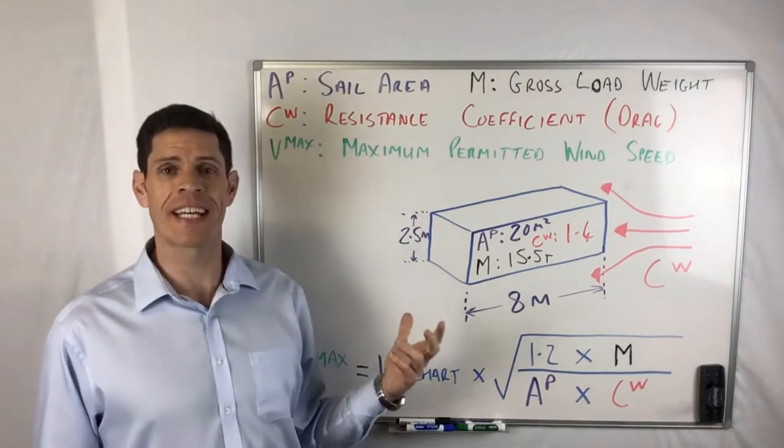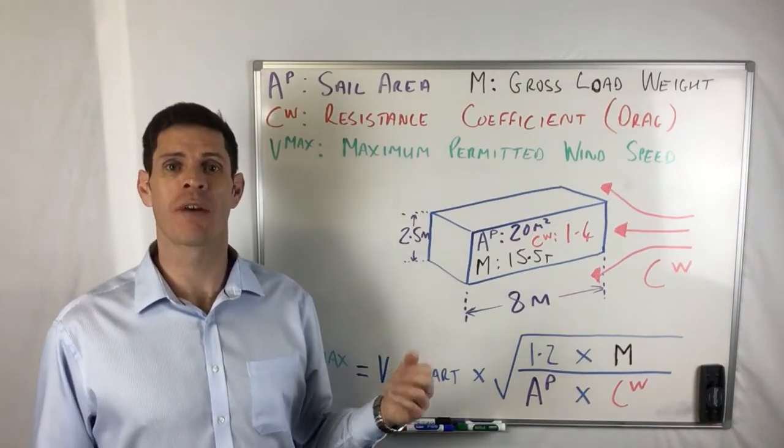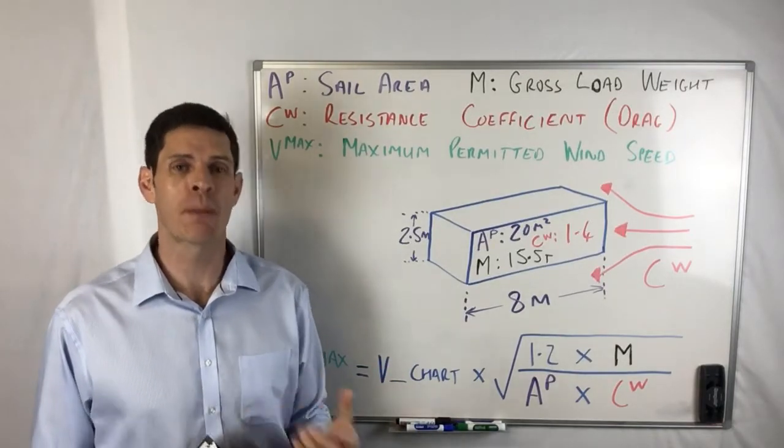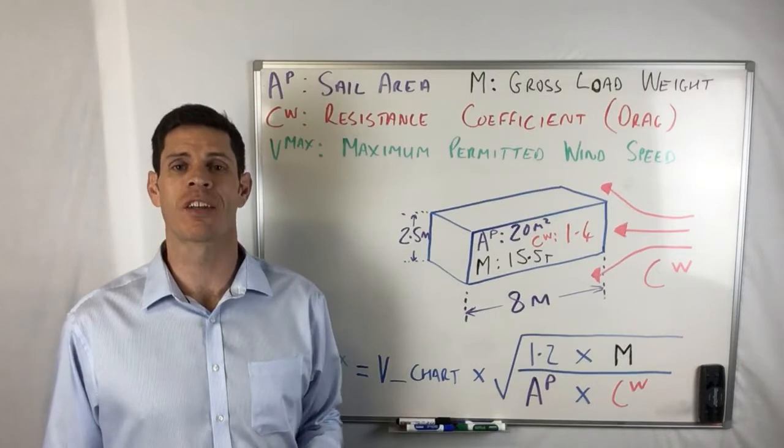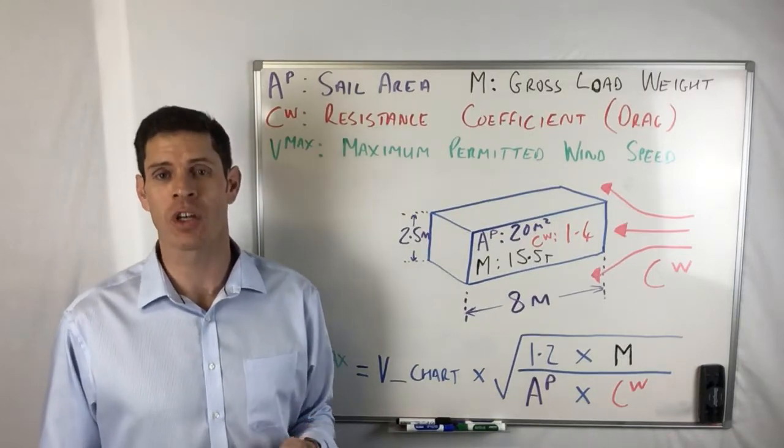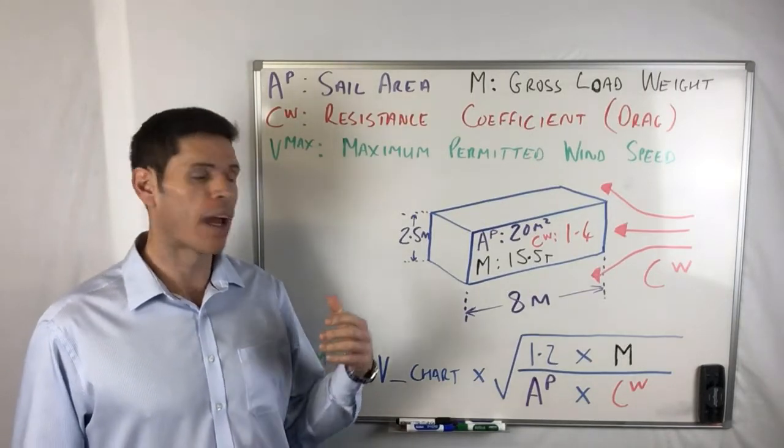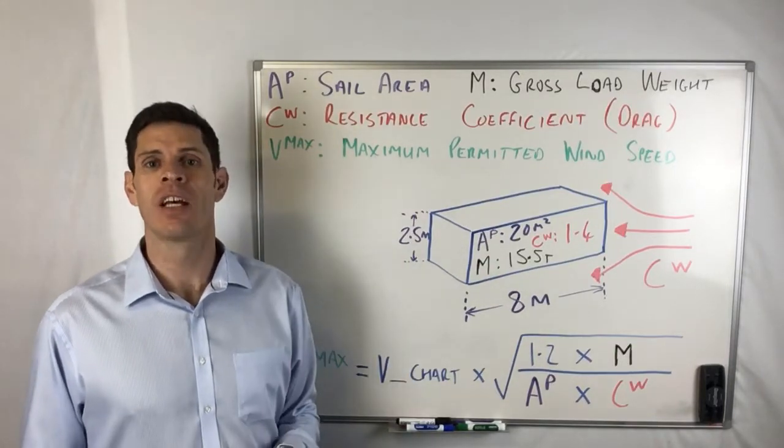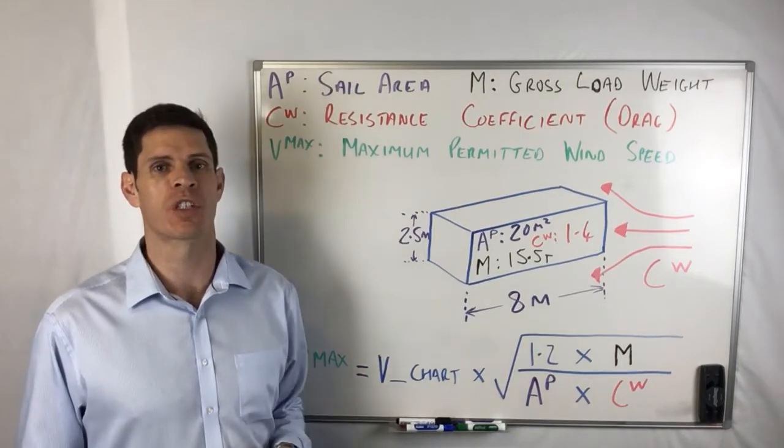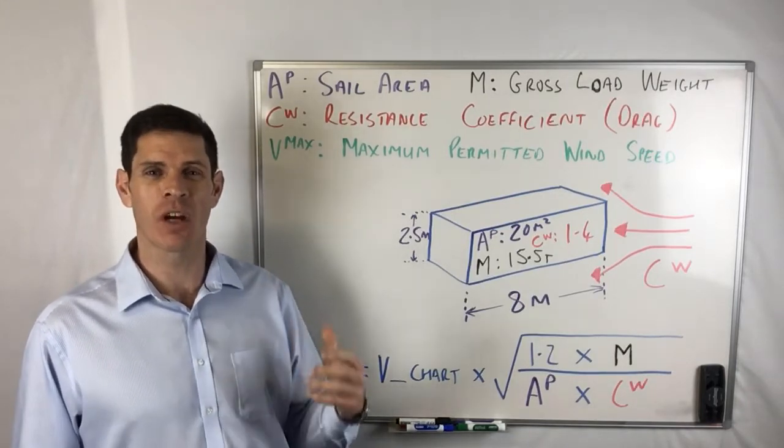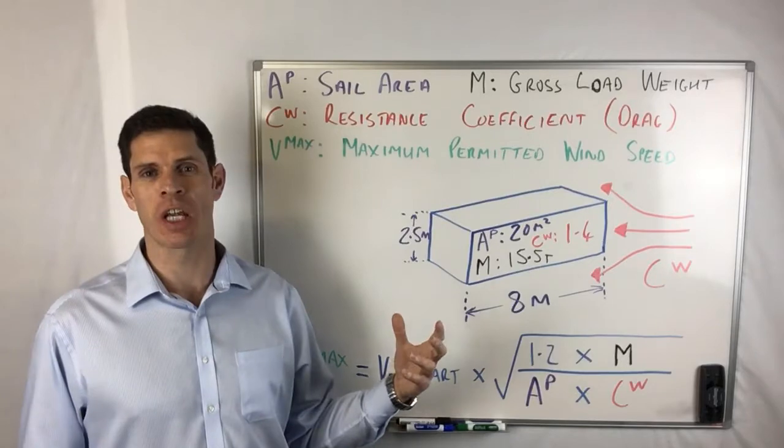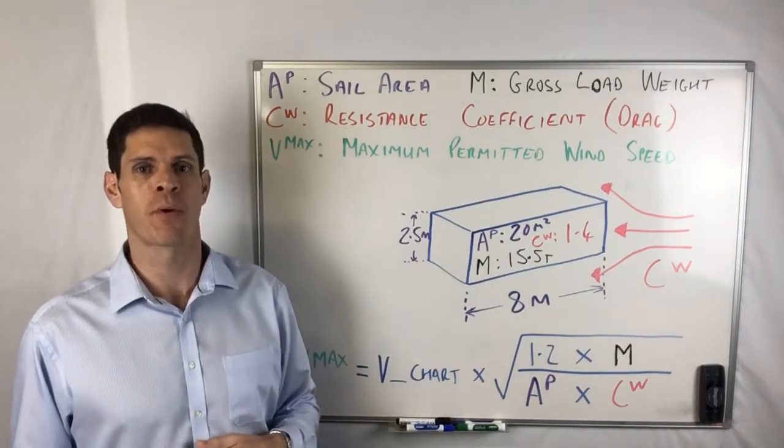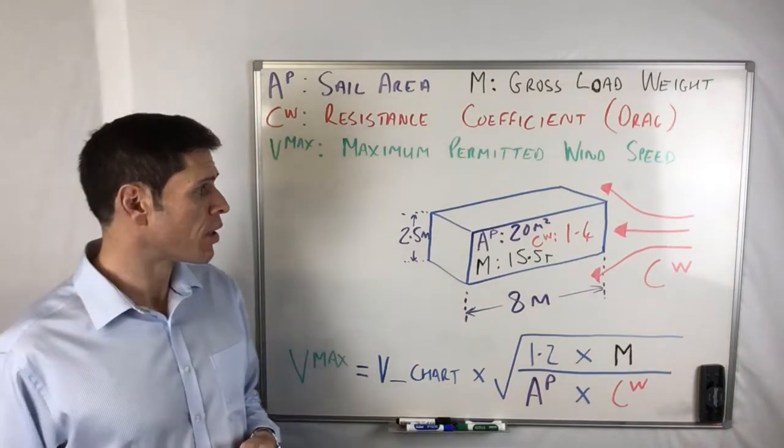Now the official line is you get the resistance coefficient from the manufacturer or designer, but that may be difficult to obtain. Within BS 7121, British Standard 7121 Safe Use of Cranes Part One, there are basic load shapes with estimated resistance coefficient values for those different load shapes. So if you're unsure you can just use the shape of the load and estimate it based on the shape of that load and those approximate values.